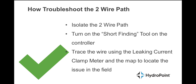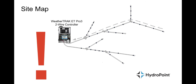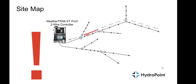When I turn on the short finding mode on the 2-Wire interface, it sends a test signal down the path and displays the total milliamp reading coming back to the controller from the farthest ends. So what you see at the controller is the total milliamp reading for the entire 2-Wire path. We turn on short finding mode, get a sample reading at the controller as a baseline — and maybe here at the controller we get a hundred milliamps, something way out of the ordinary for a 2-Wire path. My biggest controllers operate at about 50 milliamps, so anything outside of the norm is what we are looking for.